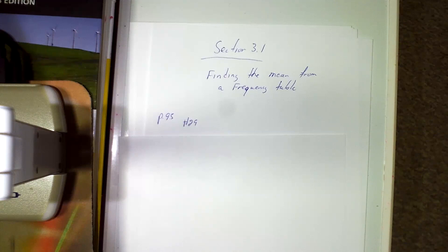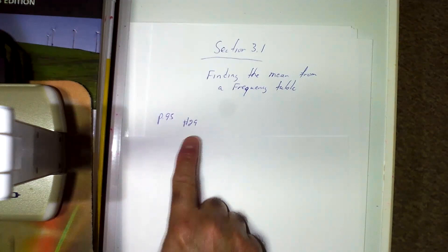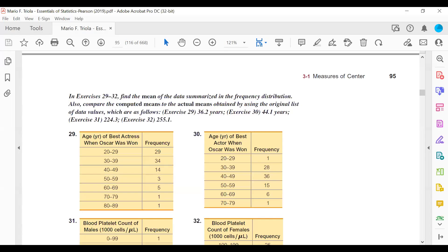Okay class, today we're going to go through section 3.1, the last part of it. The last part of section 3.1 goes over finding the mean from a frequency table. So recall when we had a frequency table, it was a summary of a list of data, and we just organized it and made a table out of it and recorded all the numbers within intervals. I'm going to show you an example from your textbook. So we're looking on page 95, number 29. So let's look at the book and go to the exercise.